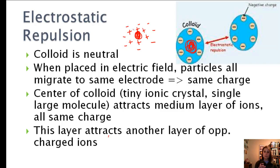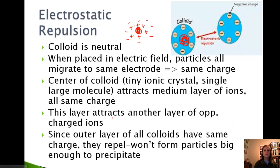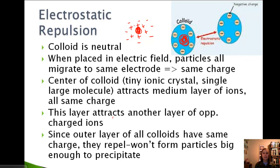And so we've got this colloid that has negative charges all the way around it. Since this outer layer all has the same charge, and all the other colloids also have the same charge, they're going to repel each other because negative and negative repels. And so because they won't ever attract, this doesn't form particles that are big enough to precipitate. And the fact that they repel each other is called electrostatic repulsion.